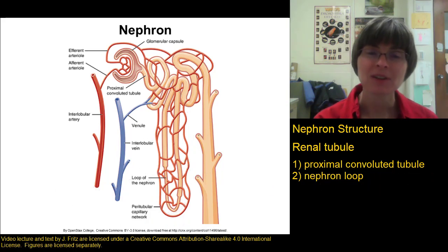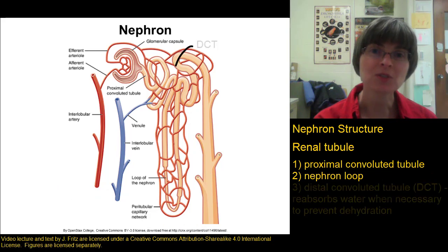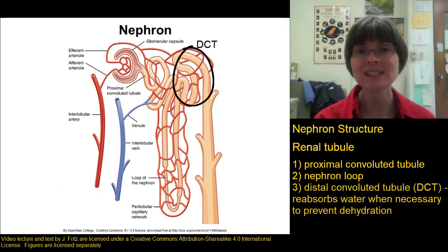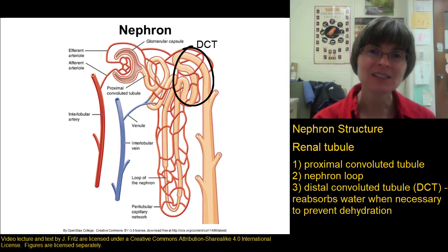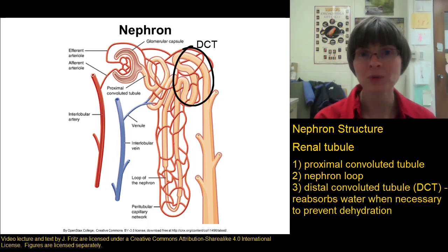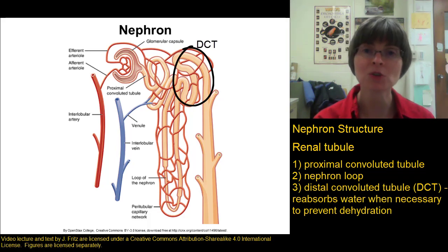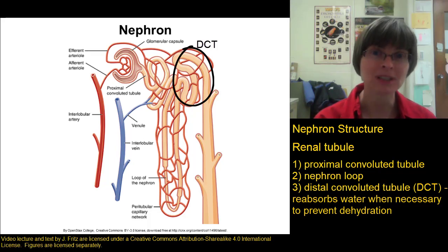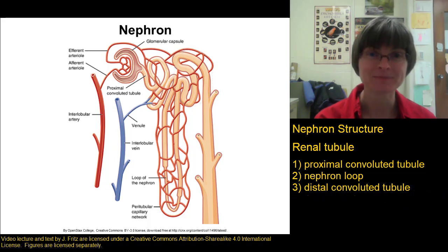The third segment of the renal tubule is the distal convoluted tubule, or DCT. The DCT doesn't do a whole lot, but it is important when we're getting dehydrated because it can reabsorb additional water when needed. We'll talk more about that process when we discuss how important it is to conserve water later on.